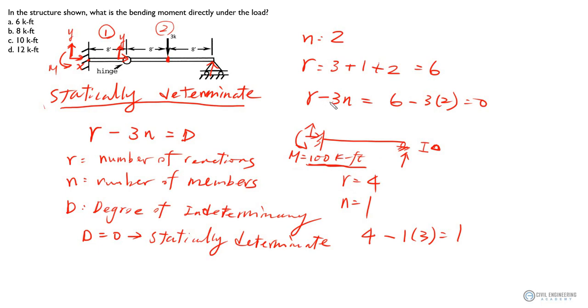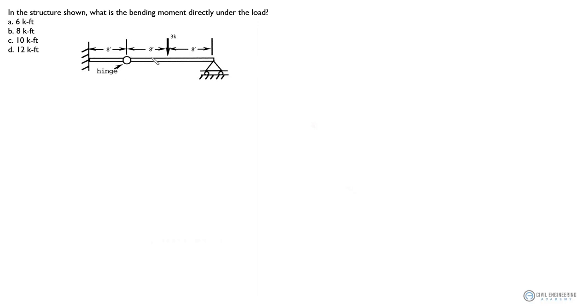This is a critical topic for beam structures and also for truss structures — determining whether the structure is statically determinate. We've talked enough about this, so let's move on. We're looking for the bending moment at the midpoint of the second member. The best approach is to separate the two members and develop your own free body diagram.